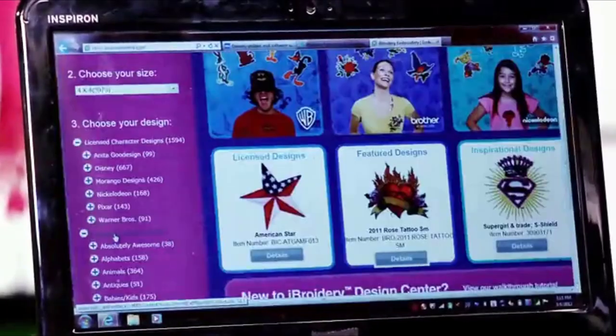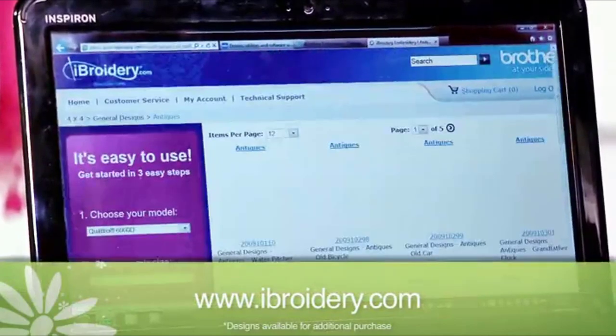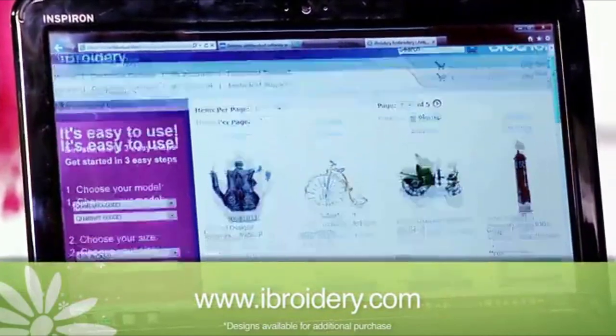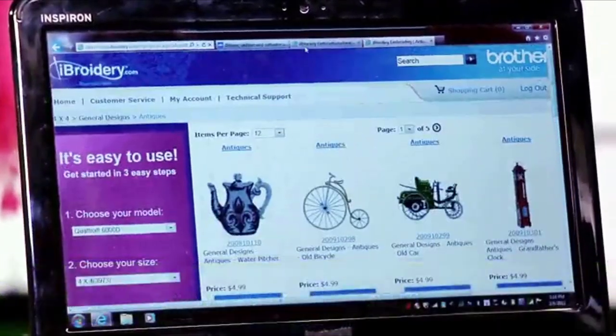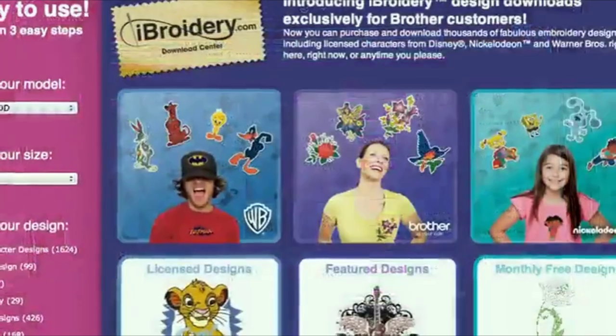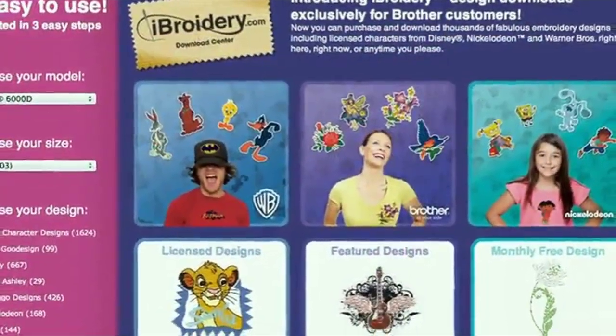Not enough designs? Then visit iBroidery.com, the Brother embroidery design website where designs can be purchased individually. There are thousands of designs to choose from, including Disney, Warner Brothers and Lifestyle designs, as well as a selection of alphabet designs.